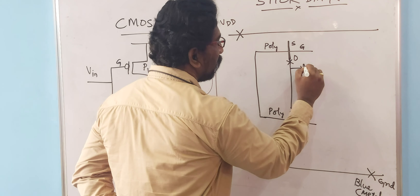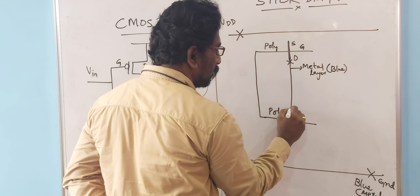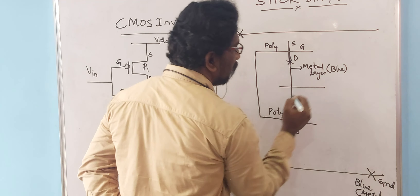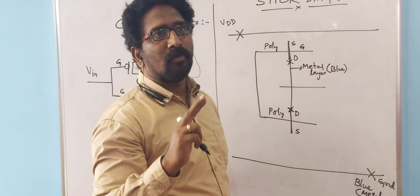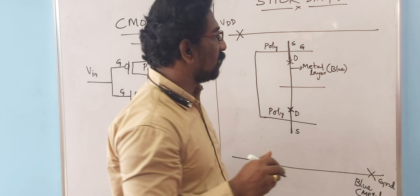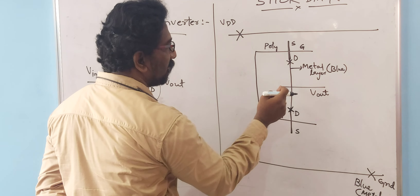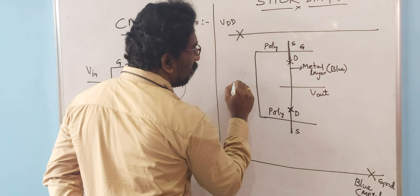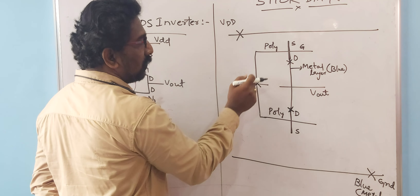This metal layer, shown in blue, connects the drain regions. Where N diffusion and metal layer meet, a contact is placed. Draw another metal layer here — since both are metal layers crossing, no extra contact is needed as they are already electrically connected. This connection acts as Vout, the output, taken between the two drain terminals. For the input VIN, draw a metal layer perpendicular to the polysilicon and place a contact to make an electrical connection between the polysilicon and metal.